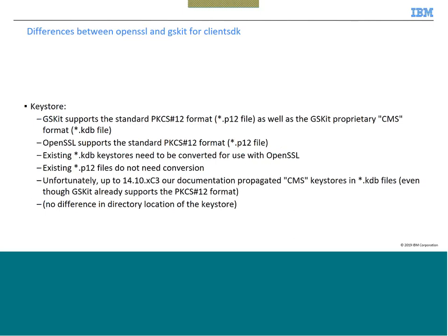Let's see the differences between OpenSSL and GSKit for client SDK. GSKit supports standard PKCS12 format as well as proprietary CMS format. PKCS12 format files generally have the extension .p12 and CMS format files have the extension .kdb. OpenSSL uses only PKCS12 format. Existing .kdb keystores — that is, CMS keystores — need to be converted for use with OpenSSL. But if you have only a PKCS12 keystore, then you don't need conversion.